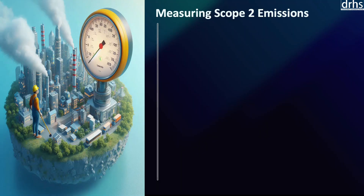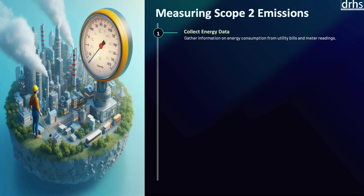Now we shall discuss the steps involved in measuring scope 2 emissions. Accurate measurement is vital for developing effective mitigation strategies, reporting to stakeholders, and complying with regulatory requirements. The first step is to collect energy data. The first step in measuring scope 2 emissions is to collect accurate and comprehensive data on energy consumption.